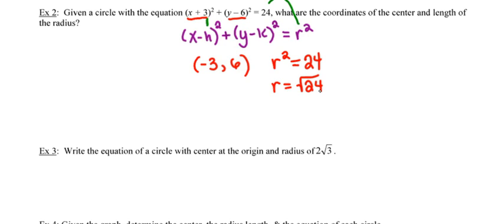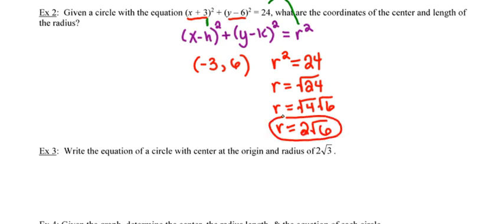Because 24 is not a perfect square, we need to simplify the radical. We take the largest perfect square factor of 24, which is 4, and rewrite root 24 as root 4 times root 6, or 2 root 6. So the coordinates of the center are (negative 3, 6), and the length of the radius in simplest radical form is 2 root 6.